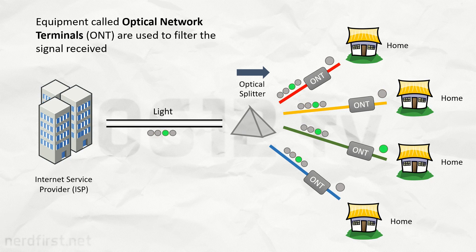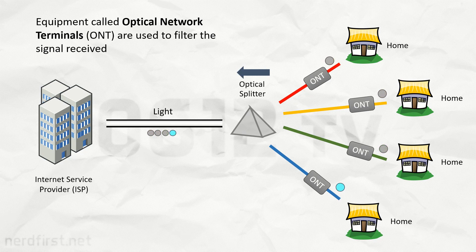The same works in reverse. User equipment from each household takes turns to send light back towards the splitter, which combines them back into a single stream. Once again, this can be done completely passively.